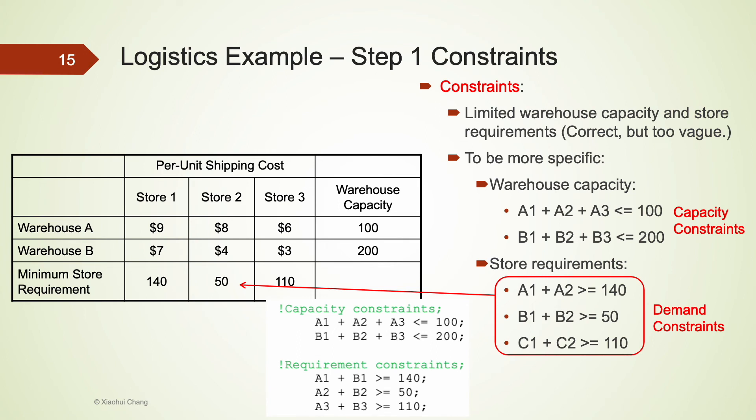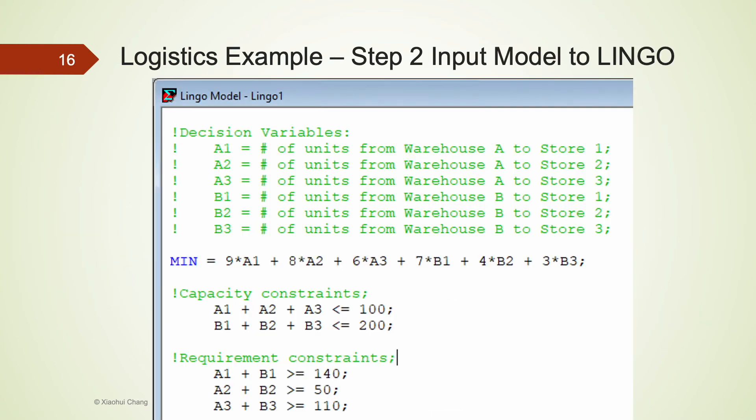I have also included all three lines of demand constraint in Lingo, and we are done with step 1. We have successfully translated the original business decision problem into a mathematical model. In step 2, we input our model into Lingo, as shown by the screenshot. The remaining two steps are quite straightforward.